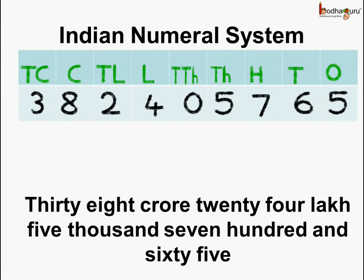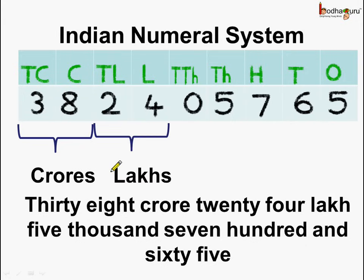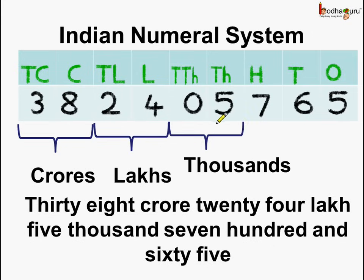In case we are confused, then after placing it under the numeral system, we can start reading the crores. Like how many crores are there? Here we have thirty-eight crores. Next, it is followed by lakhs — here we have twenty-four lakhs. Then it is followed by thousands — here we have five thousands. And lastly it is followed by how many hundreds, tens and ones. So this way we can read any large number easily.